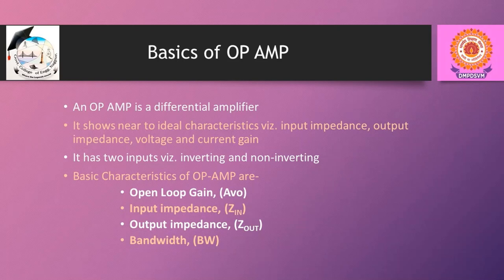Basically it has two input terminals called inverting and non-inverting input terminals. The output voltage is out of phase when input is connected to the inverting terminal, whereas the output is in phase when input is connected to the non-inverting terminal. One more basic characteristic is that the Operational Amplifier has very large bandwidth.